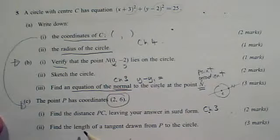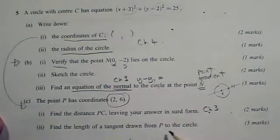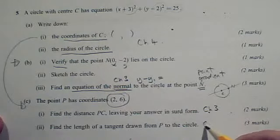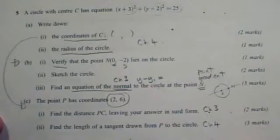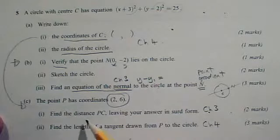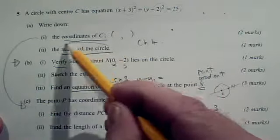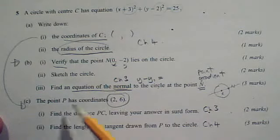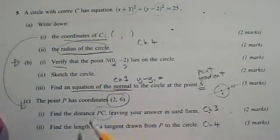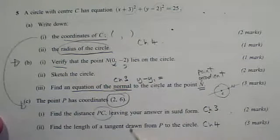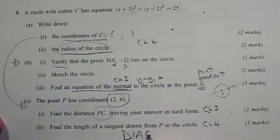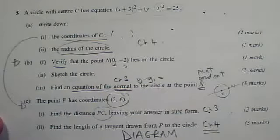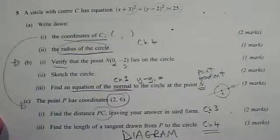And then finally we've got to find the length of a tangent drawn from P to the circle. There are examples of this in chapter 4, the length of tangents. We're going to be using the radius that we found before and the distance from P to the centre that we found. So that's some of the ingredients, but you need a diagram for part 2. Worked examples in chapter 4 will help.